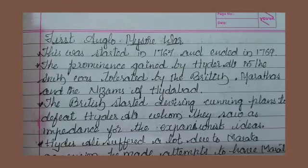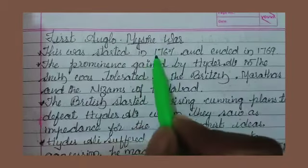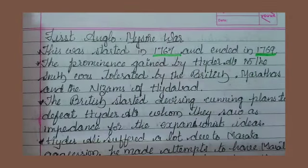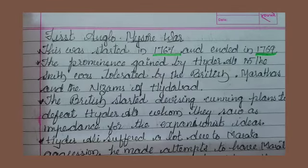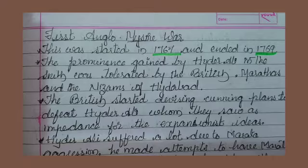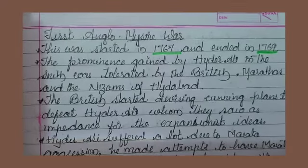Now we will speak about the First Anglo-Mysore War, which started in 1767 and ended in 1769. 'Anglo' refers to the British East India Company, and it is related to Mysore — that is why it is called the Anglo-Mysore War. The prominence gained by Hyder Ali in the south was not tolerable to the British, Marathas, and Nizams of Hyderabad. The British started devising plans to defeat Hyder Ali.